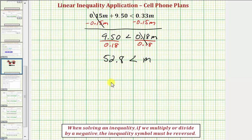We can also reverse the order here and say M is greater than approximately 52.8. Notice how the inequality symbol is still pointing toward 52.8 and open toward M. Let's take this back to the previous slide and answer our question.